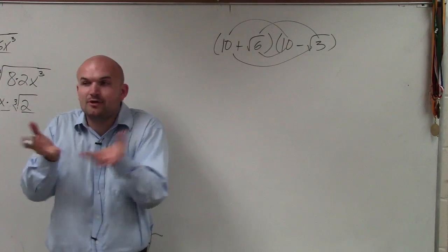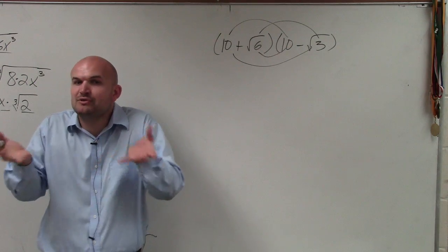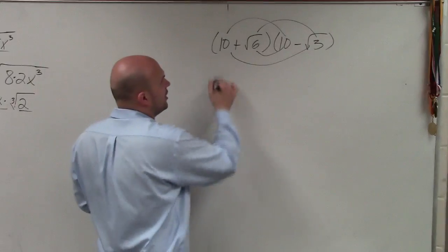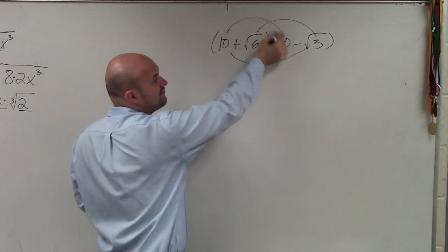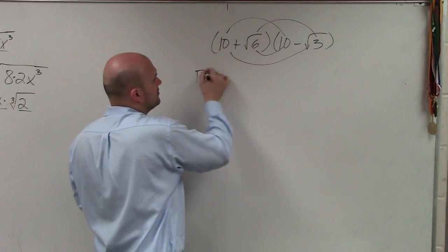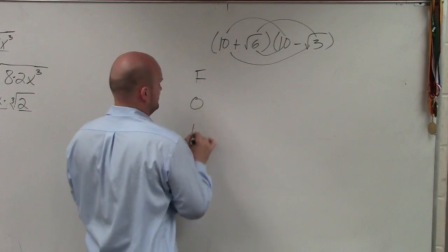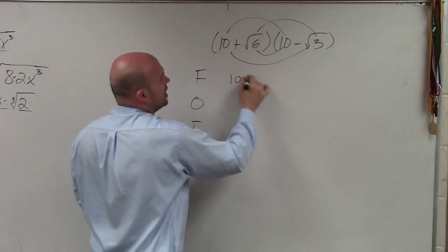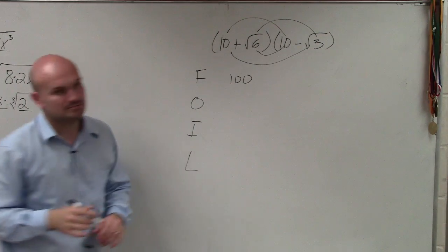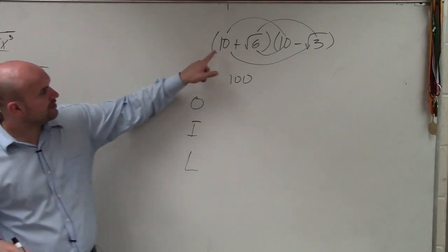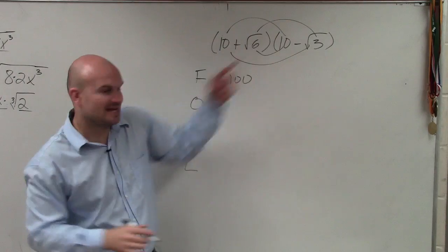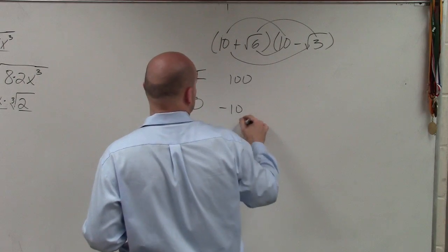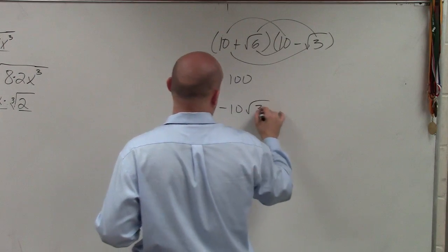Anytime you guys see a binomial times a binomial, you need to apply FOIL. So in this case, all I'm going to do is apply FOIL. First: 10 times 10, which is 100. Outer: 10 times negative 3, giving negative 10 square root of 3.